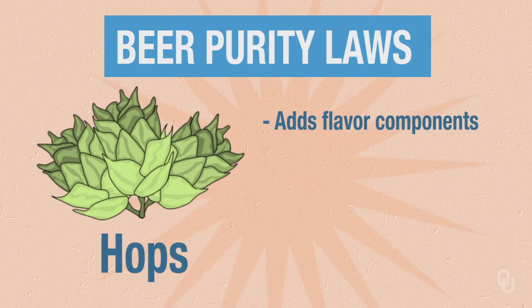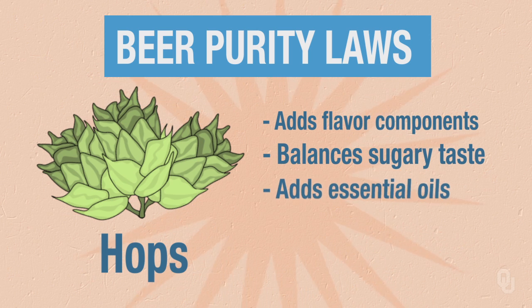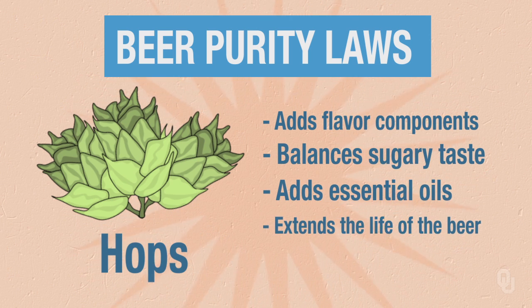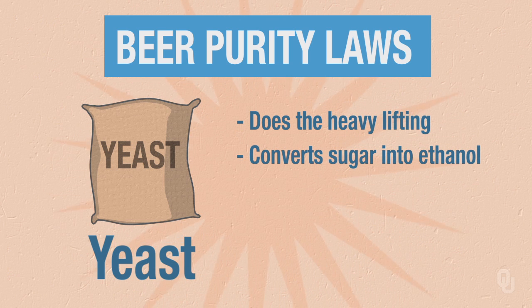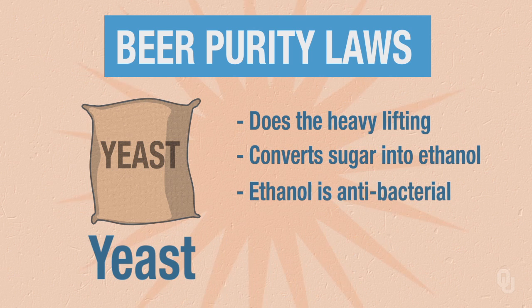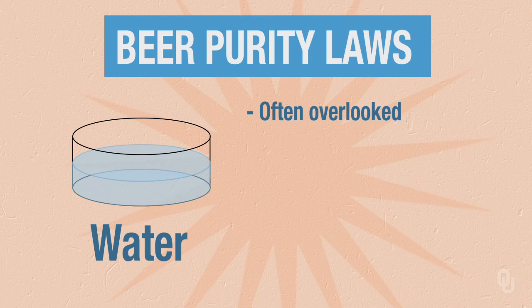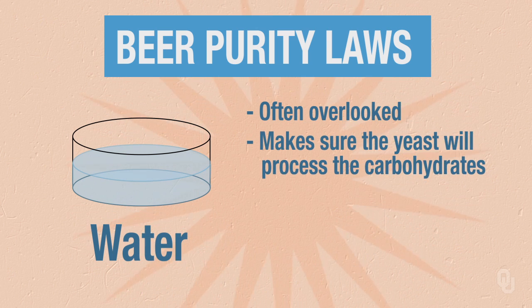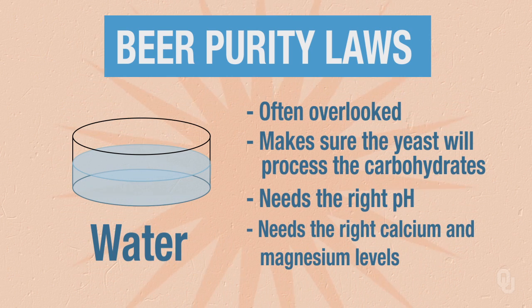The hops adds flavor components to balance the sugary taste of the malt, but it also adds some essential oils that extend the life of the beer. The yeast does the heavy lifting — it is there to convert sugar into ethanol. The ethanol is important because it's actually antibacterial, which means that beer will last longer, in many cases, than the grain might have. Water is often overlooked, but it's essential to make sure that the yeast will process the carbohydrates well. This means we have to have the right pH, and the right calcium and magnesium levels.